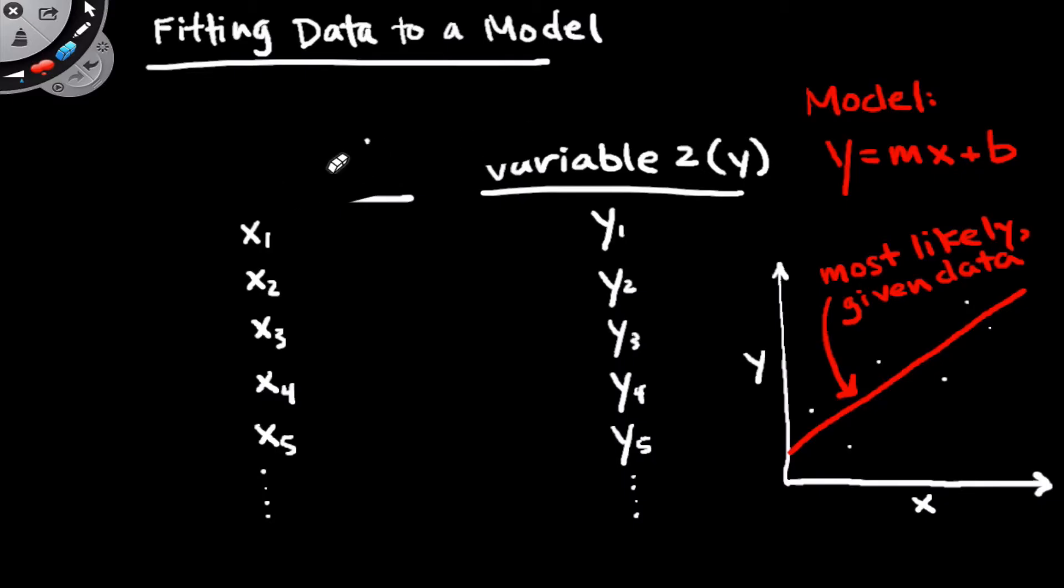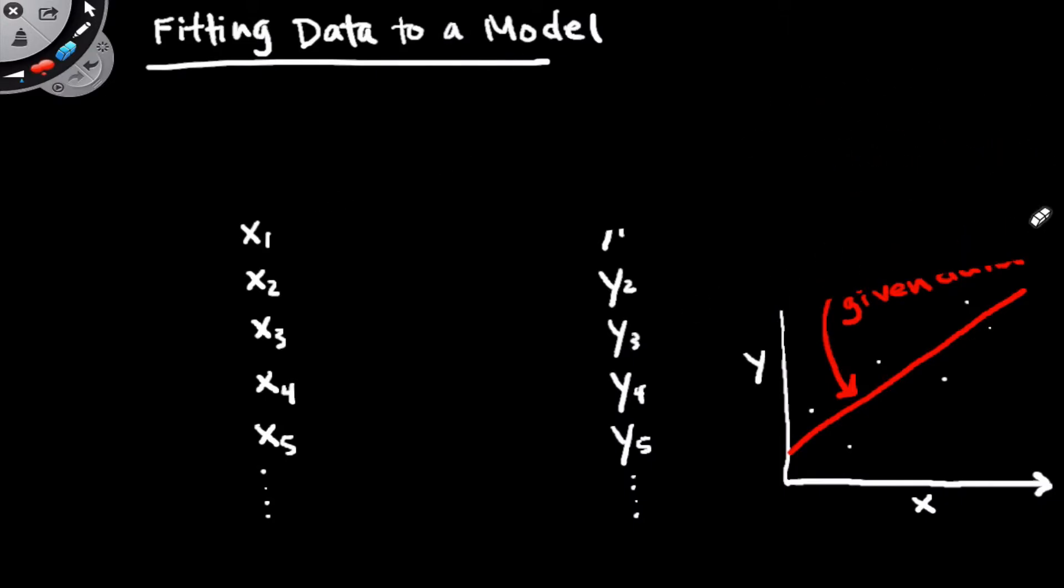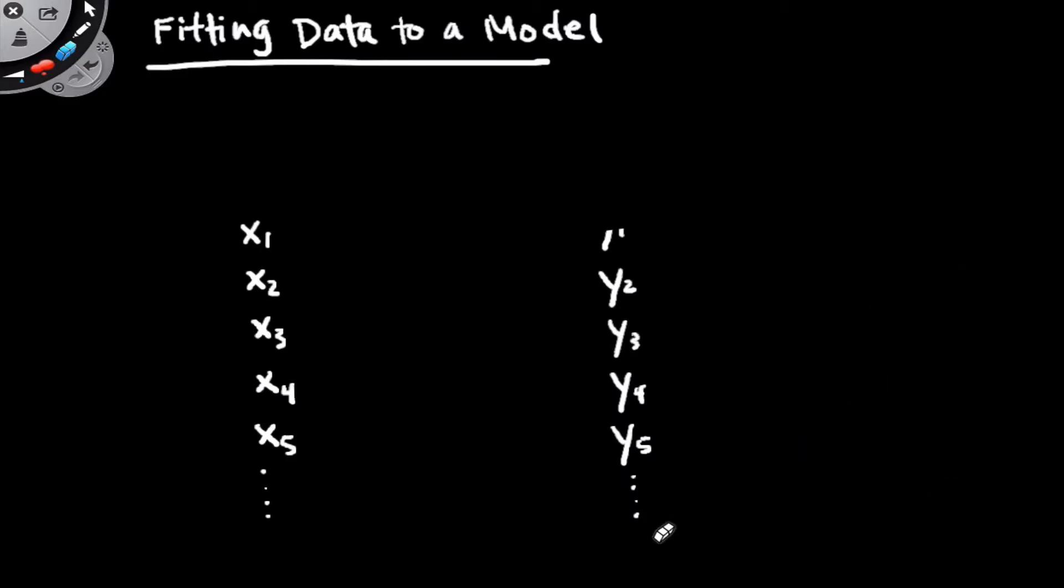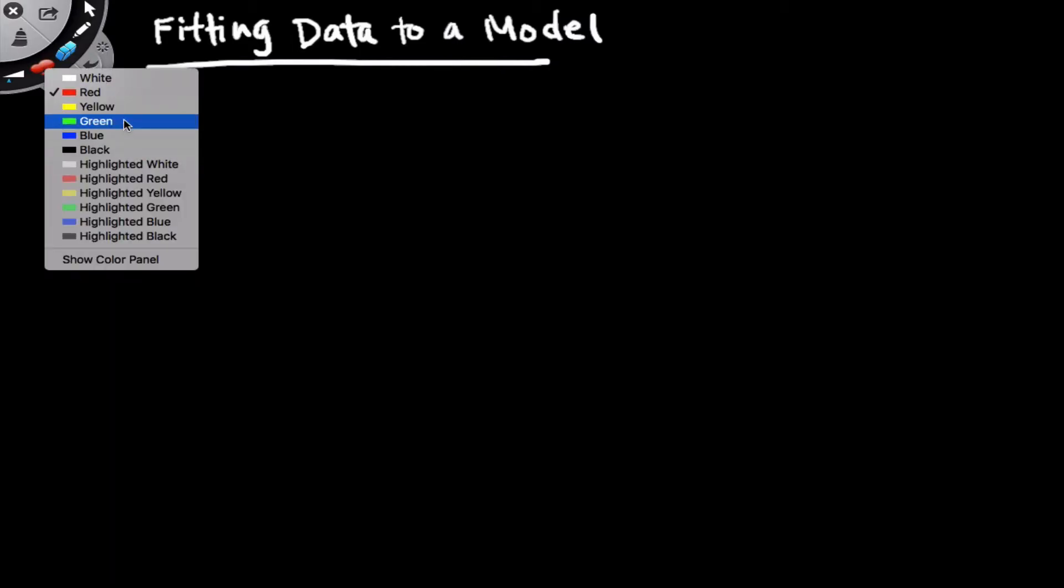Variables may depend on one another in complicated ways. Maybe y equals x squared, or y equals the natural log of x, or y equals e to the power of negative x, or something along these lines. So we're going to need, even in general chemistry, a way to fit data to more complicated models than simple linear models.